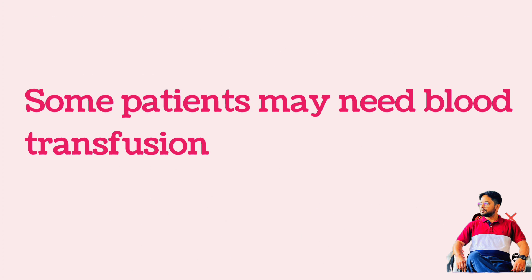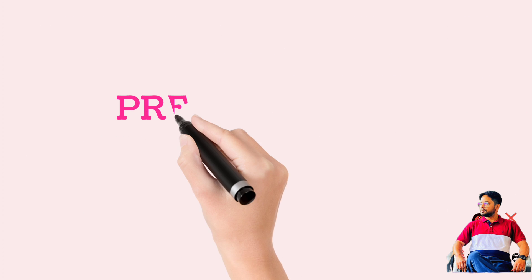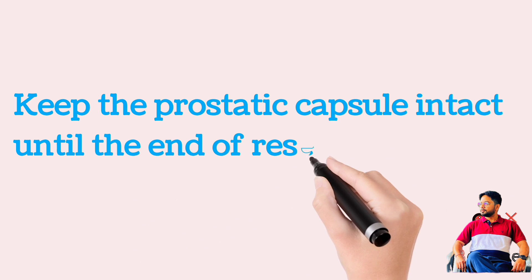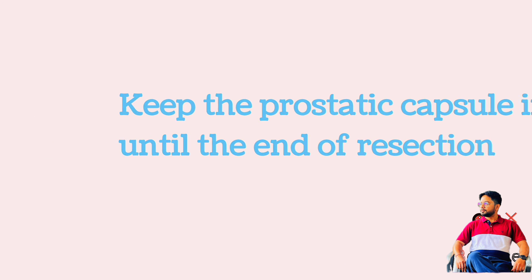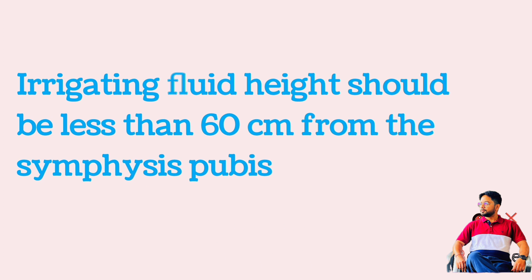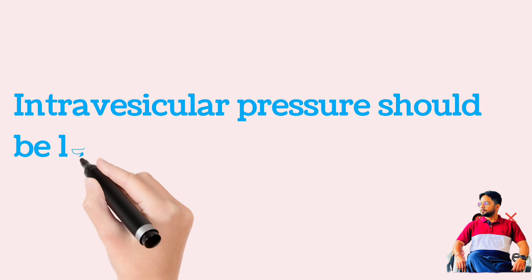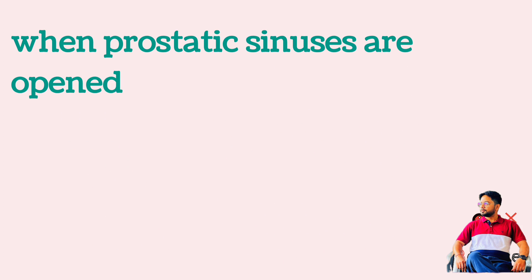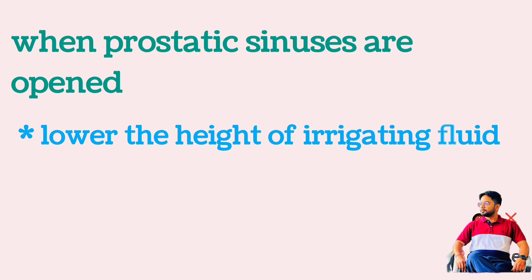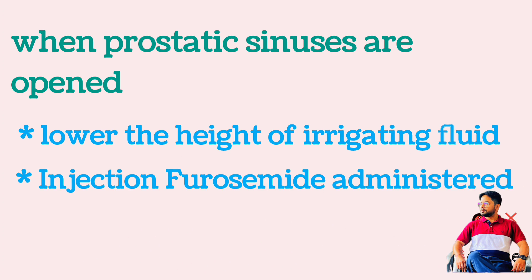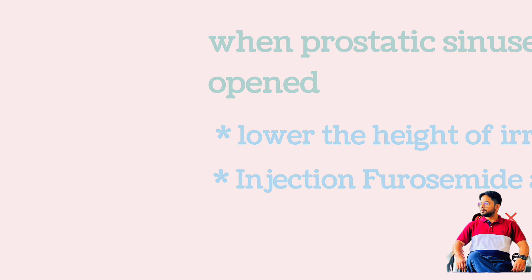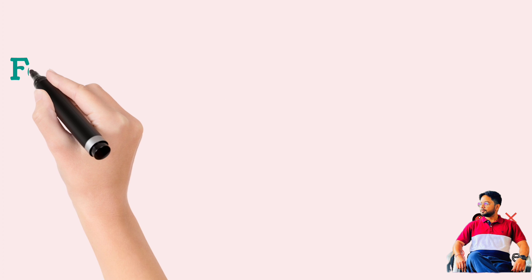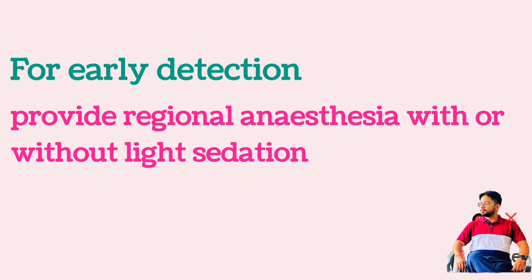Patients may sometimes also need blood transfusion. Prevention: Resection time should be less than one hour. Keep the prostatic capsule intact until the end of resection. Irrigation fluid height should be less than 60 cm from the symphysis pubis. Intravesical pressure should be less than 15 cm of H₂O. When prostatic sinuses are opened during the procedure, irrigation fluid should be lowered and furosemide administered. Measure serum sodium during and after resection. Administer regional anesthesia with or without light sedation to detect the syndrome early.